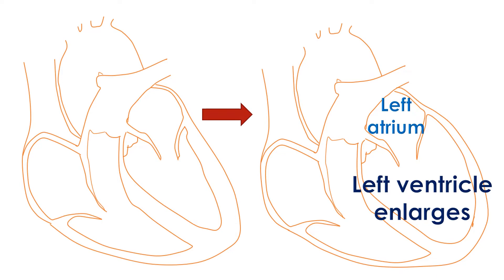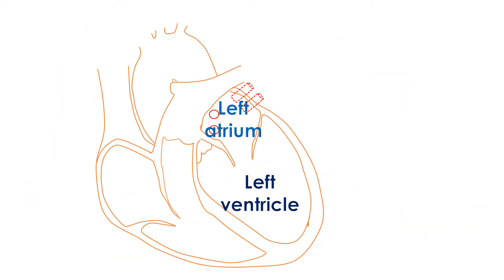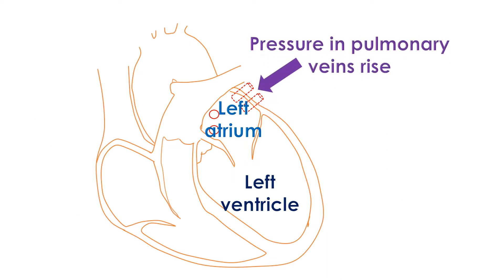Gradually, the pressure in the left ventricle when it relaxes after a contraction increases. This increase in pressure is transmitted back to the left atrium, the upper chamber from which the left ventricle receives blood when it relaxes and fills.